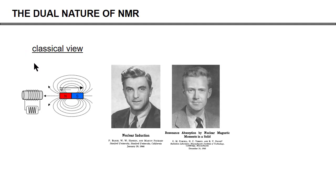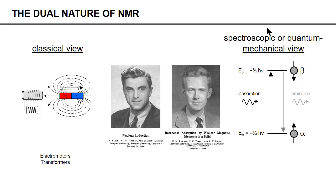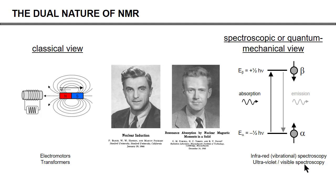Bloch explained the NMR phenomenon using classical arguments — using magnets, flux lines, and induction — the same kind of terms you would use to describe electric motors or transformers, so classical objects. Purcell, on the other hand, used a more spectroscopic or quantum mechanical view in which the orientation of the spin is quantized, it has a corresponding energy level, and the system is investigated through the absorption of RF energy.